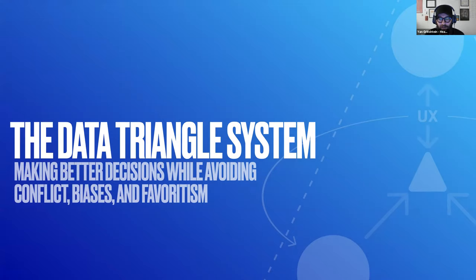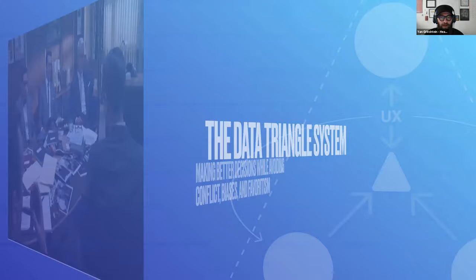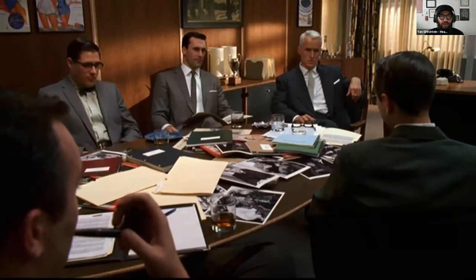Essentially, the Data Triangle System is designed to make better decisions, to avoid favoritism, biases, conflicts, and actually see a much bigger picture. Now, most of your students probably haven't had the chance to sit in the boardroom with different stakeholders in the room, making decisions during a meeting.